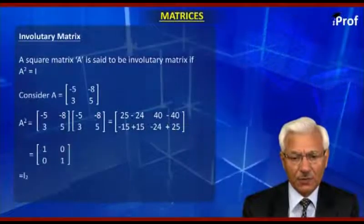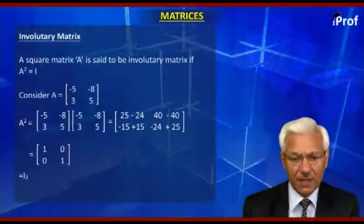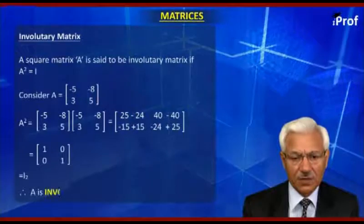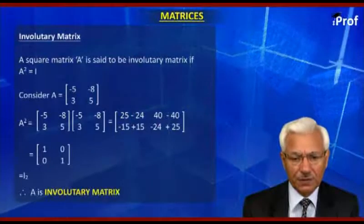Therefore, A squared is equal to the identity matrix. Hence, A is an involutory matrix.